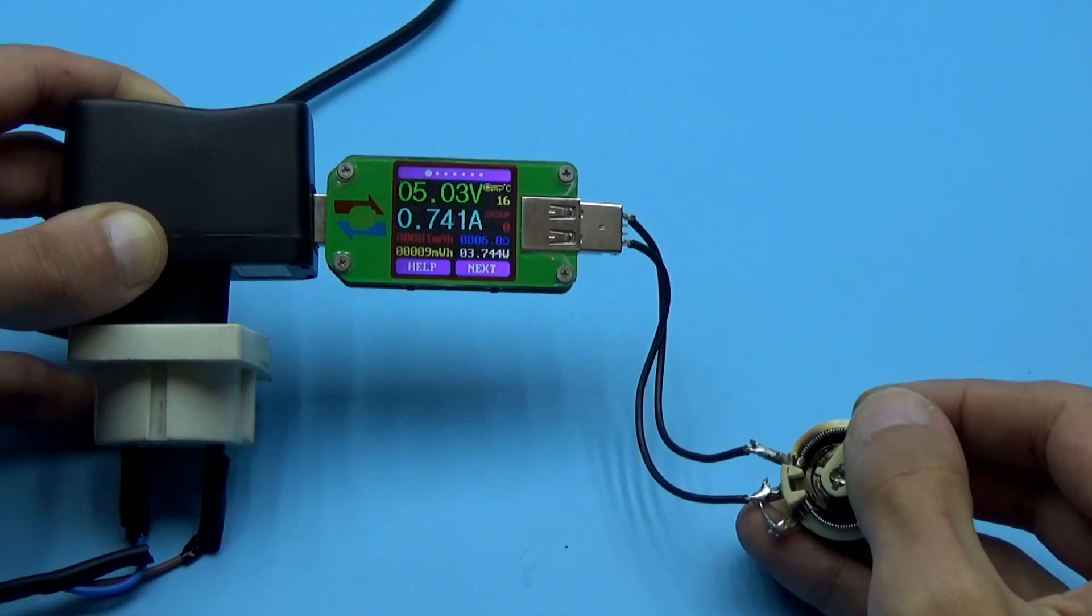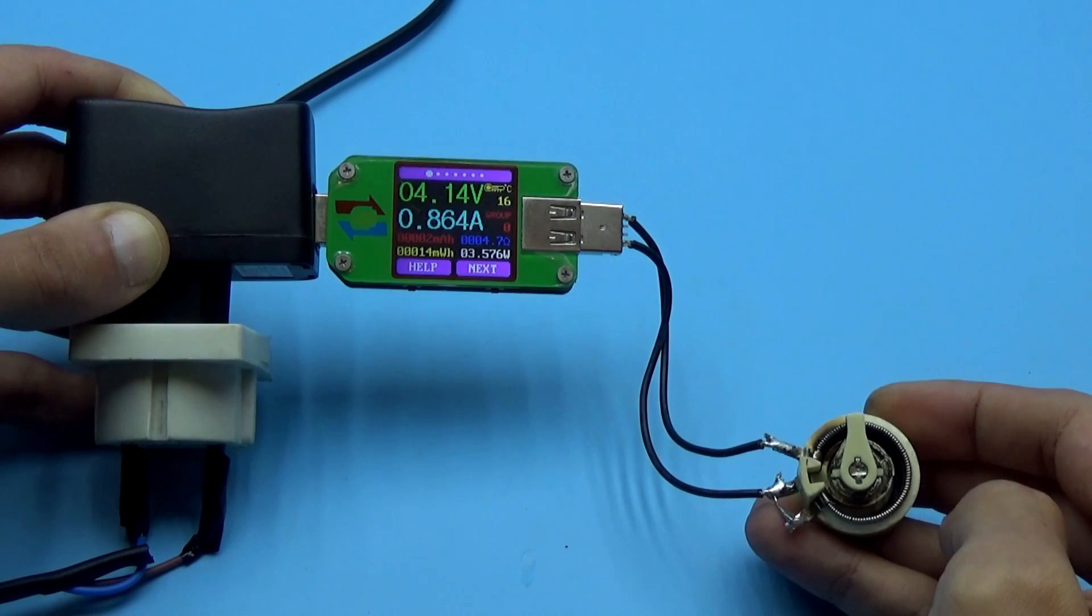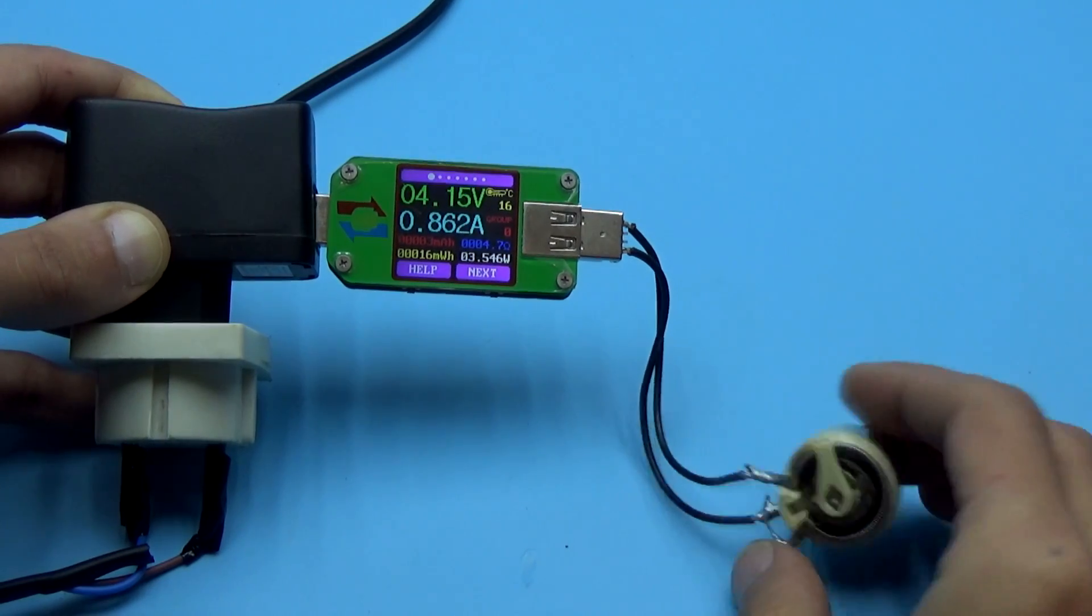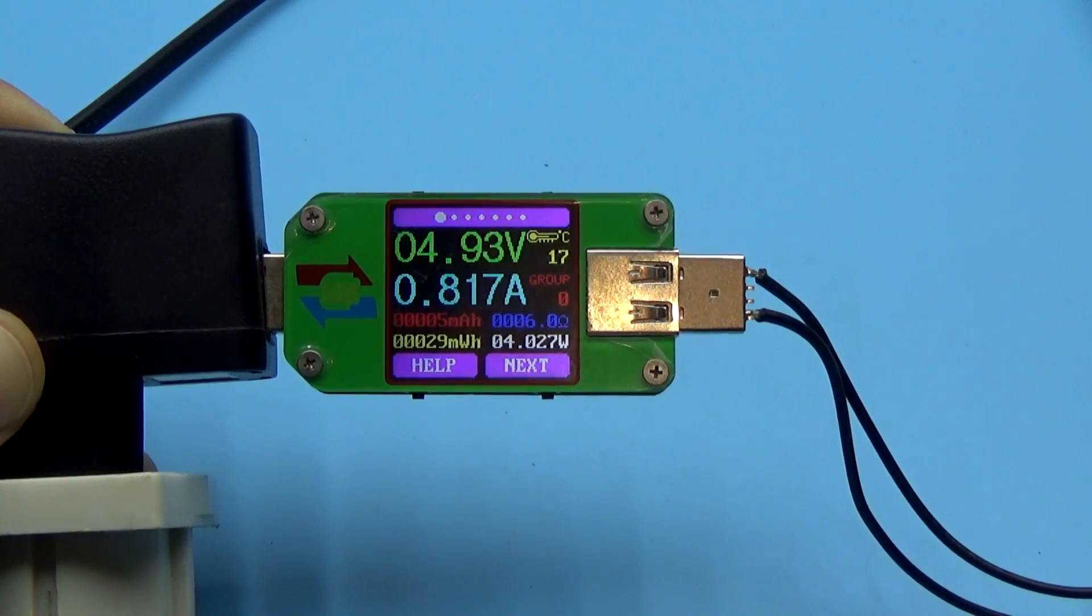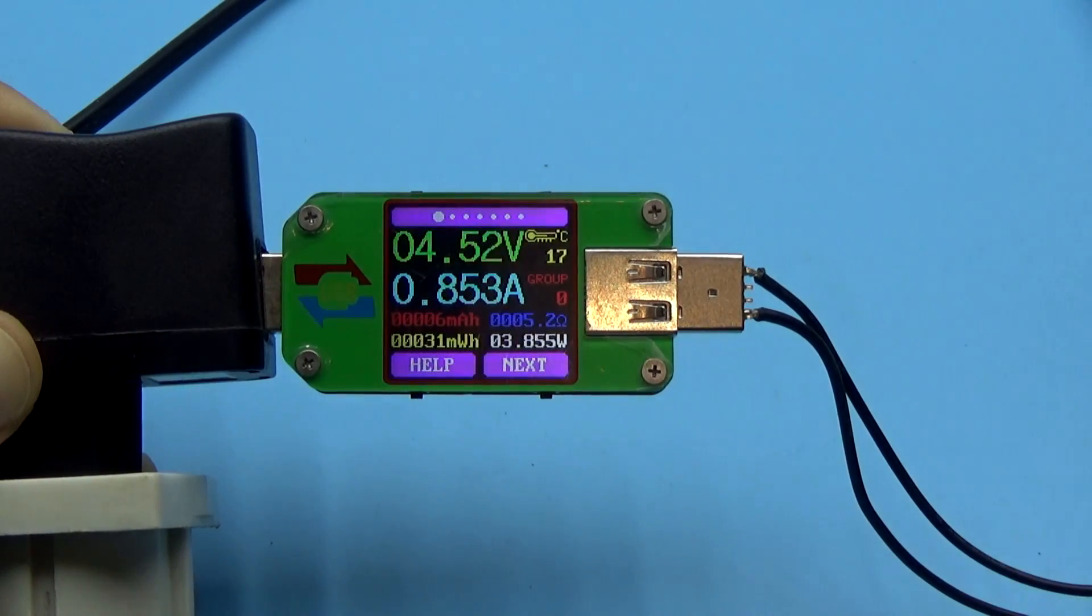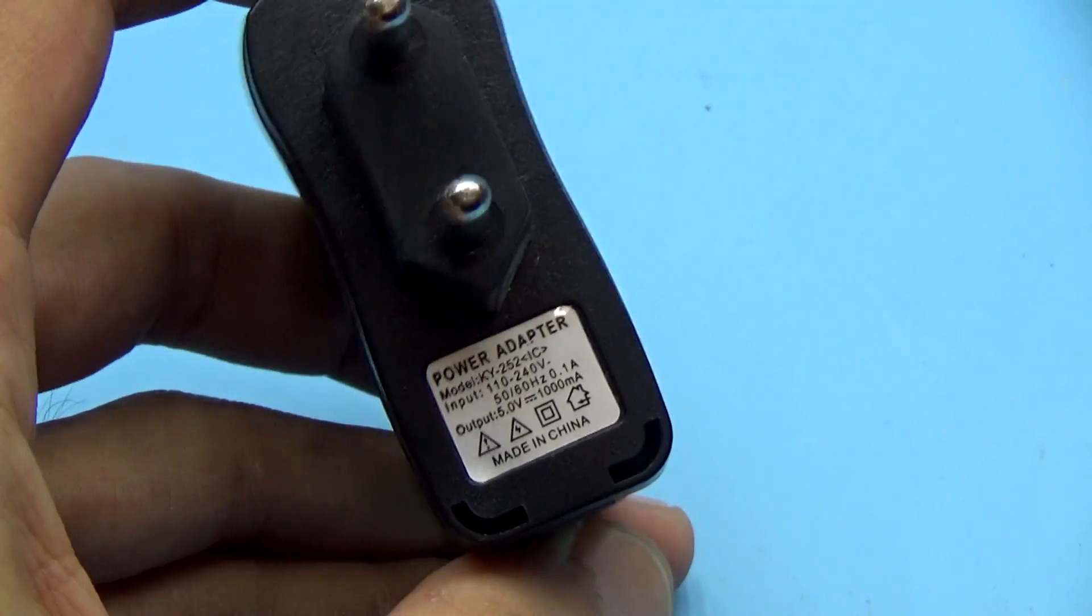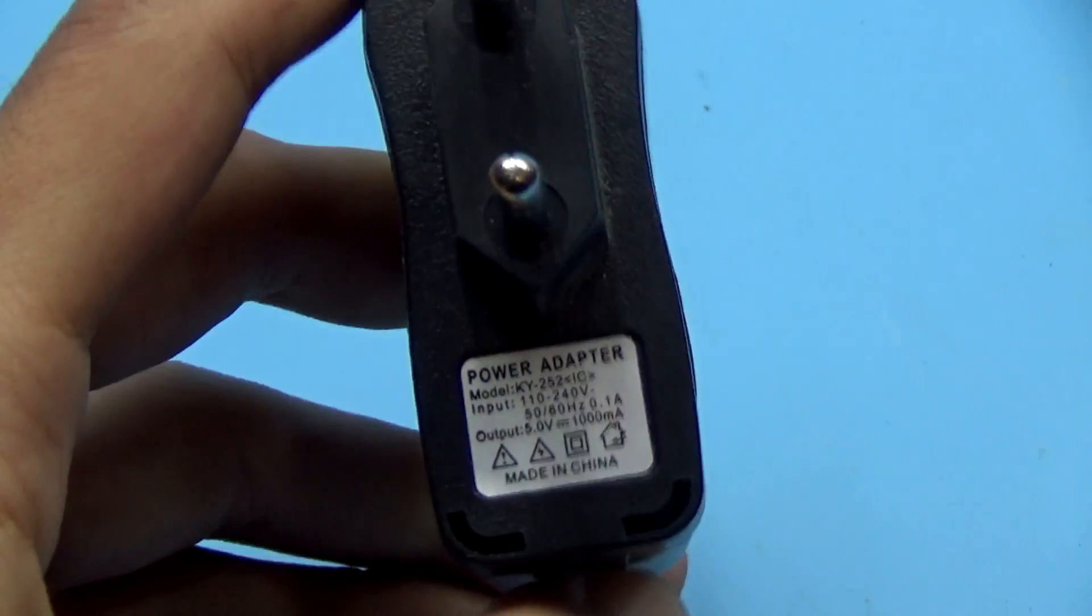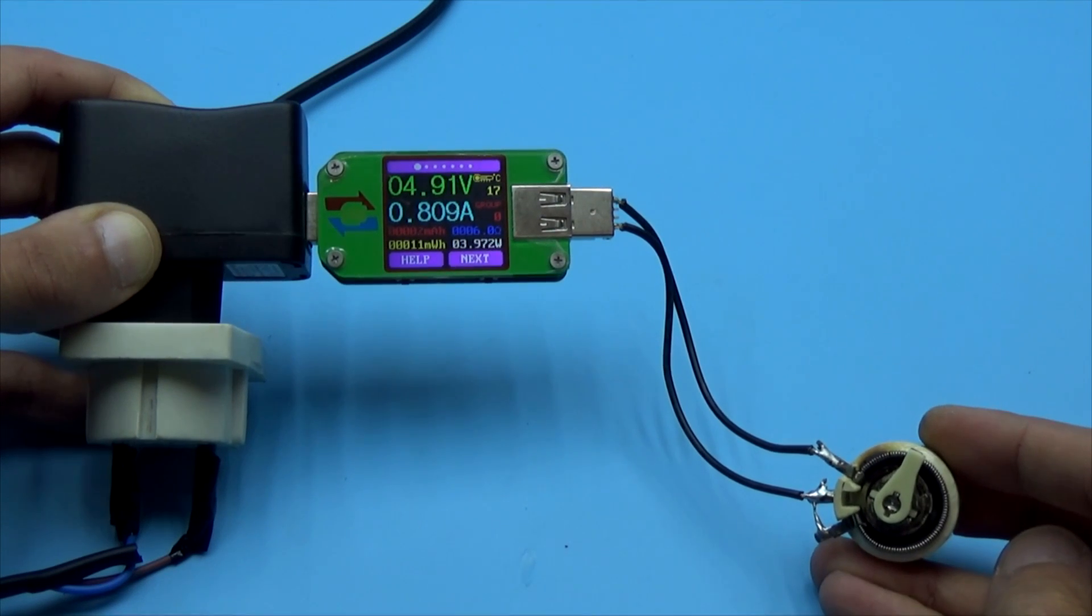Here we clearly see that when the output current is more than 800 mA, the output voltage drops below 5V and at a current of 850 mA, the drawdown is very hard. This is the limit. If we load more, the protection will work. Based on this, we can say that the parameters declared by the manufacturer are too high. But even with a current of 800 mA, such a unit will not live long.